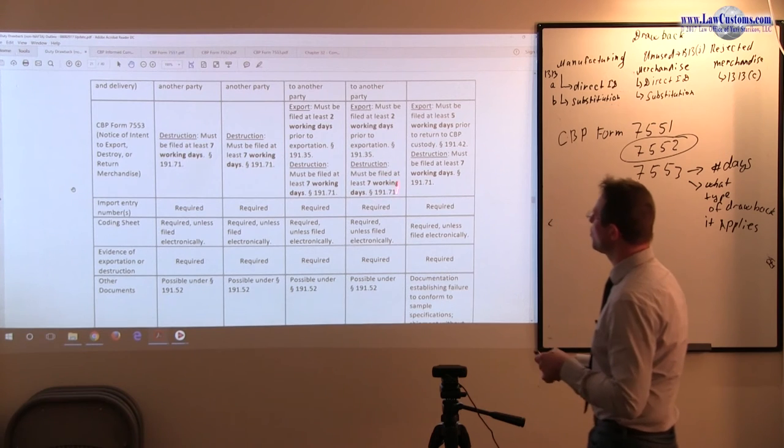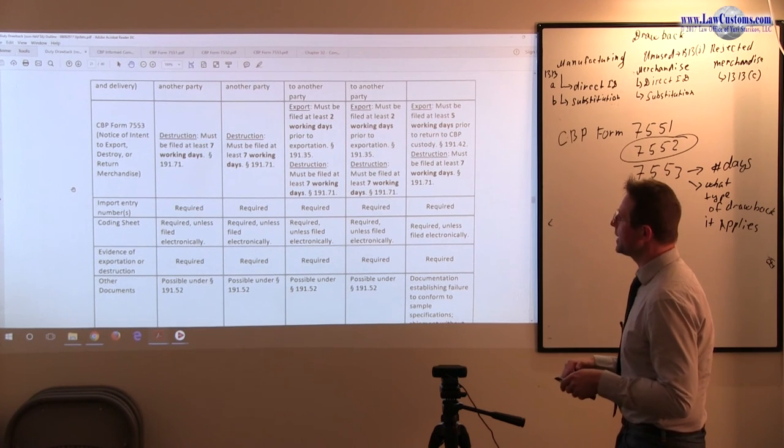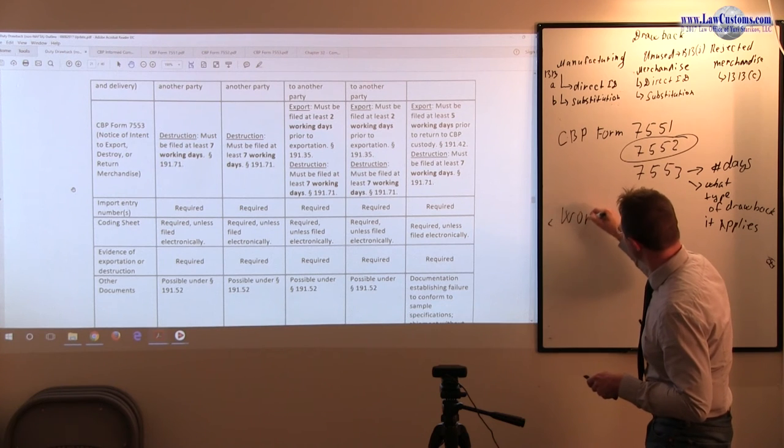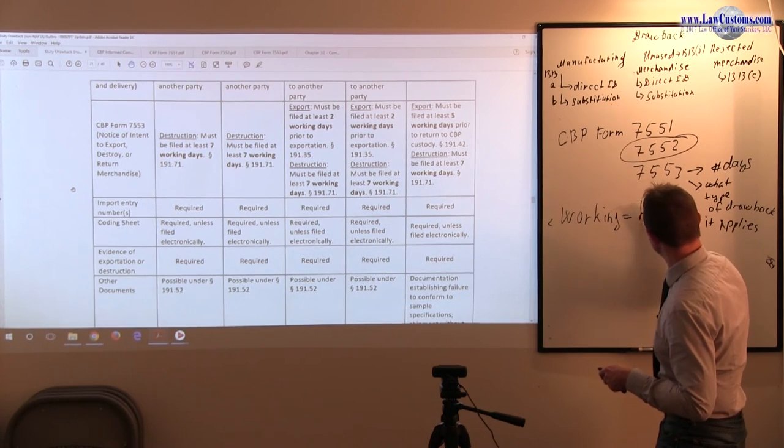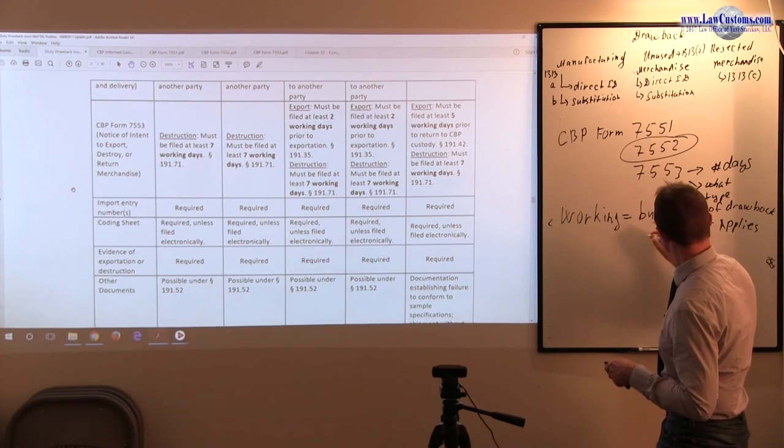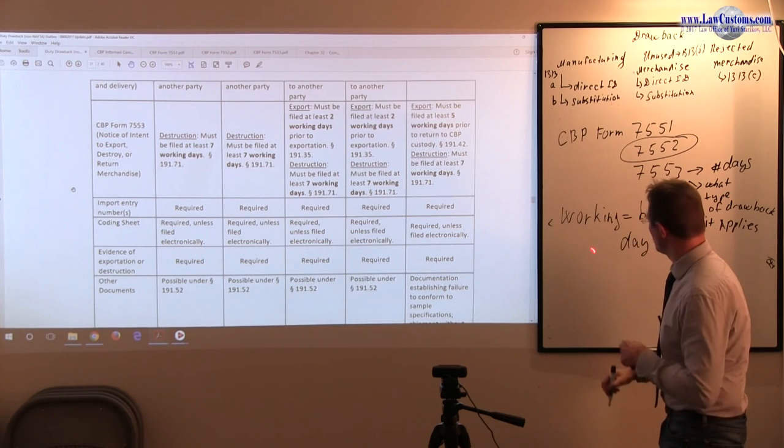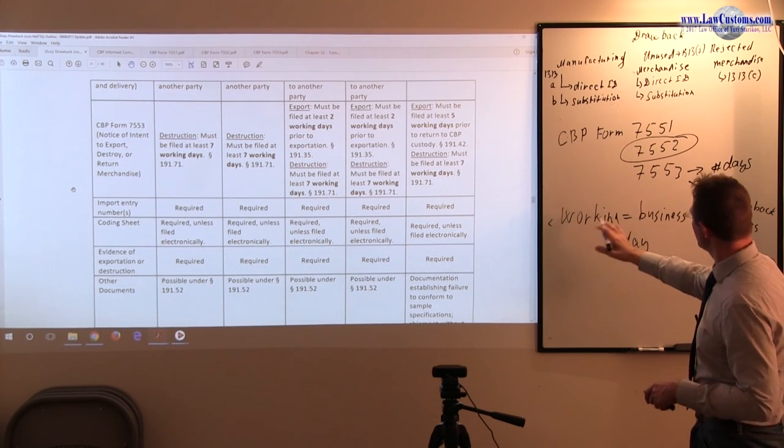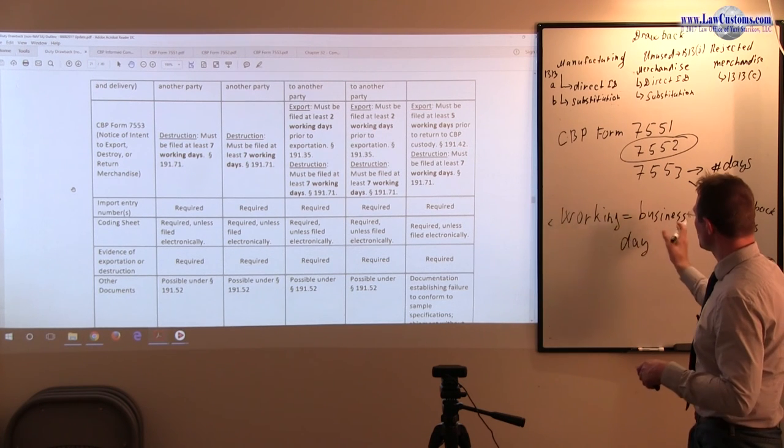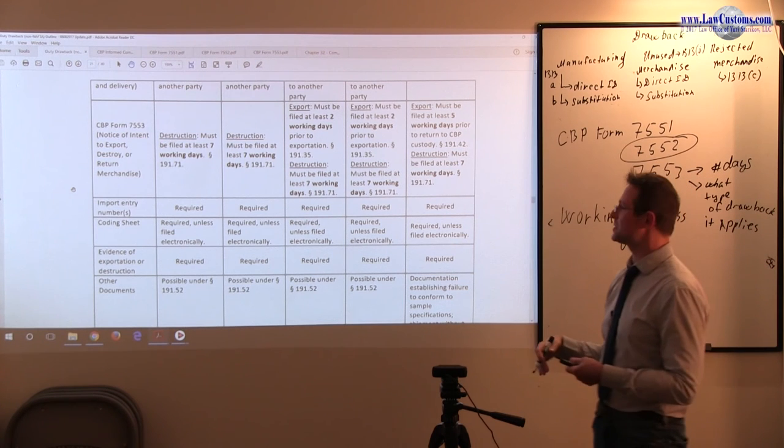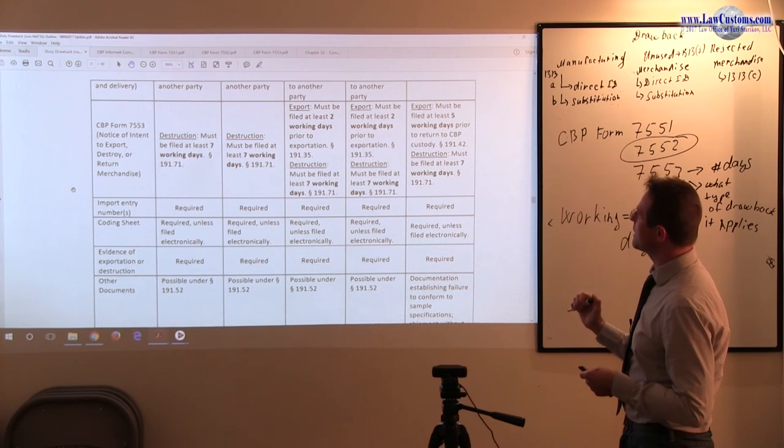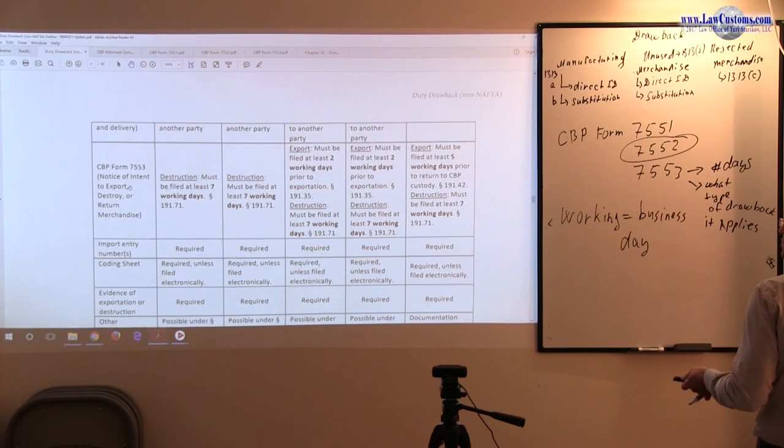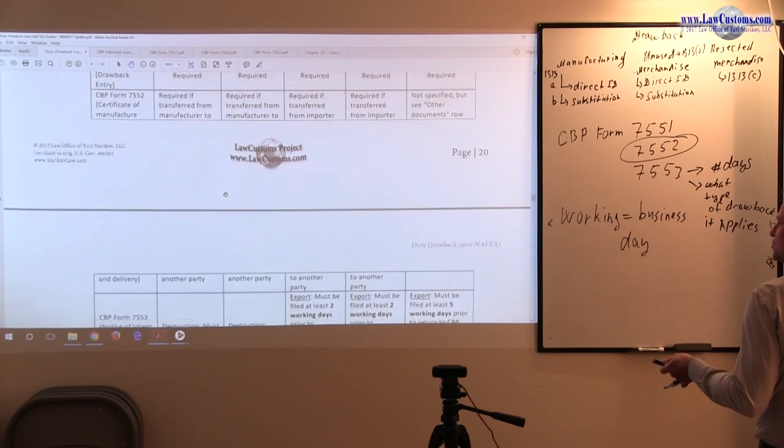So destruction is applicable to all types of merchandise, all types of drawback, and it is seven working days rule. Keep in mind, when you speak working, working day equals business day. And the reason for working day equals business day, the reason for you to pay attention to that is because throughout the past, customs examiners have been alternating these words during the customs broker exam questions.